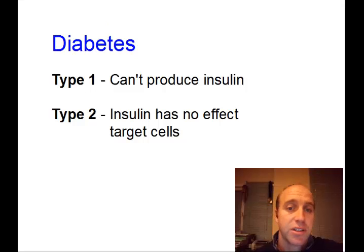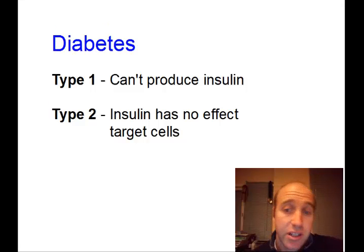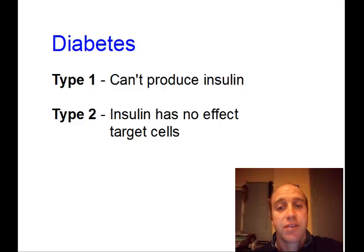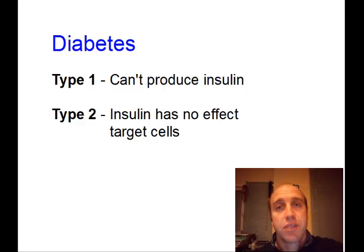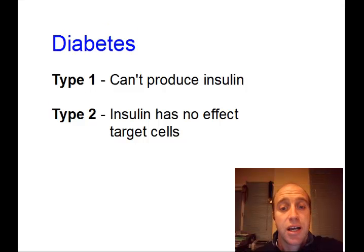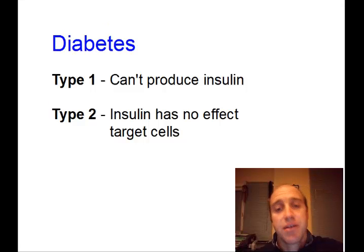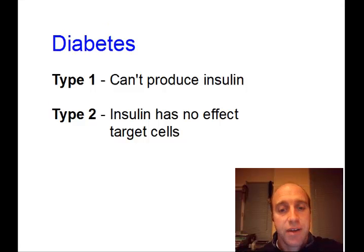I'm just going to quickly mention diabetes, and there are two types. Type 1 diabetes, which is inherited, is one where you can't produce insulin. So that really affects an individual's ability to regulate those high levels of glucose that might occur, and they can have injections of insulin to help them do that. Type 2 diabetes is where the insulin actually has no effect on the target cells. That's one that can develop over time, and basically through poor diet and lots of high glucose levels, these cells can just become less receptive to insulin.